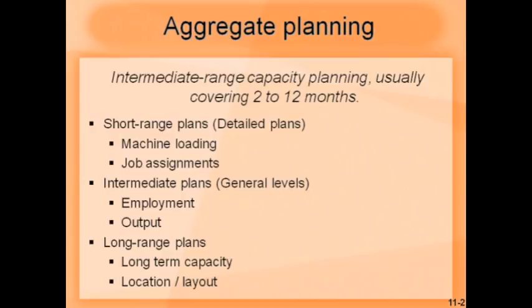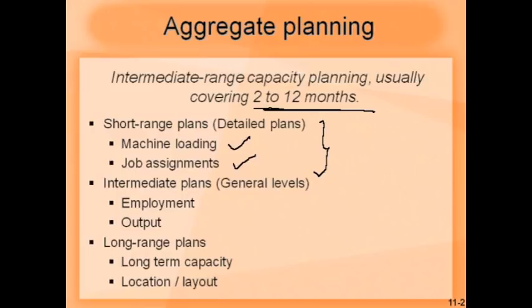A definition of aggregate planning is intermediate range capacity planning, usually covering 2 to 12 months. If you look at the overall picture, short-range plans are more detailed, covering less than two months, dealing with things like machine loading and job assignments — which worker is going to work on which machine — worked out on a daily basis, every shift. Intermediate plans talk about employment: how many people will be needed in the next year and how much output is needed.